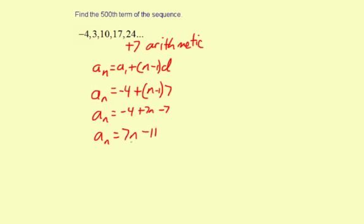Now that we have the rule for the sequence, we're going to find the 500th term by substituting 500. So a_500, meaning the output for 500, equals 7 times 500 minus 11.